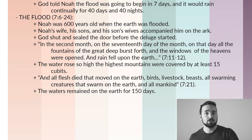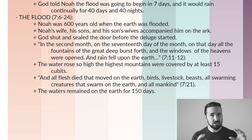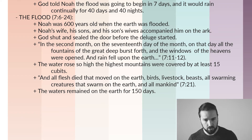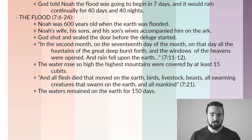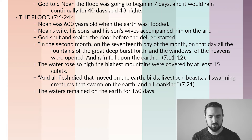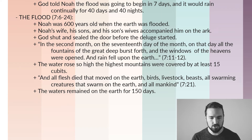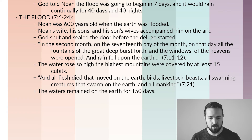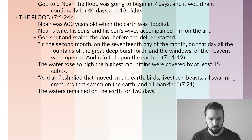It was actually God who shut and sealed the door of the ark before the deluge started. The text says: 'In the second month, on the 17th day of the month, on that day, all the fountains of the great deep burst forth, and the windows of the heavens were opened, and rain fell upon the earth.' — Genesis 7:11-12.